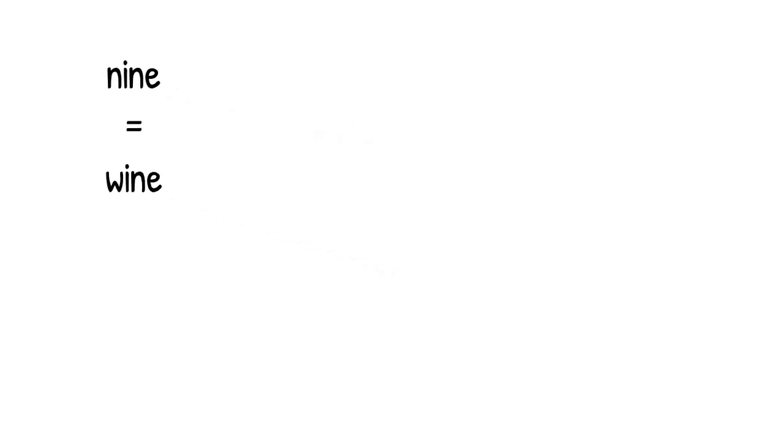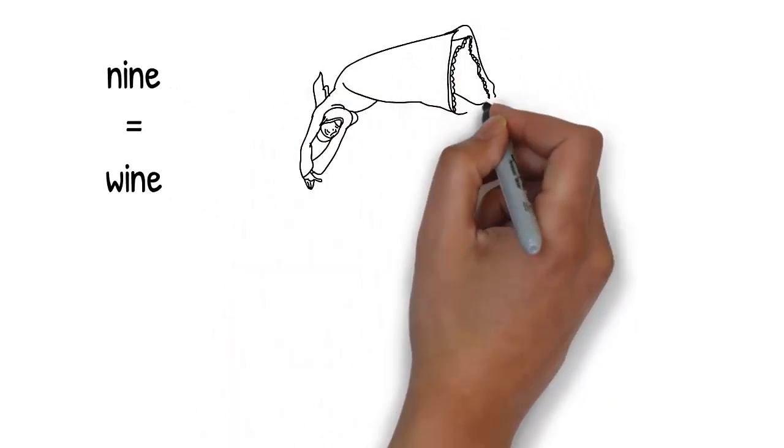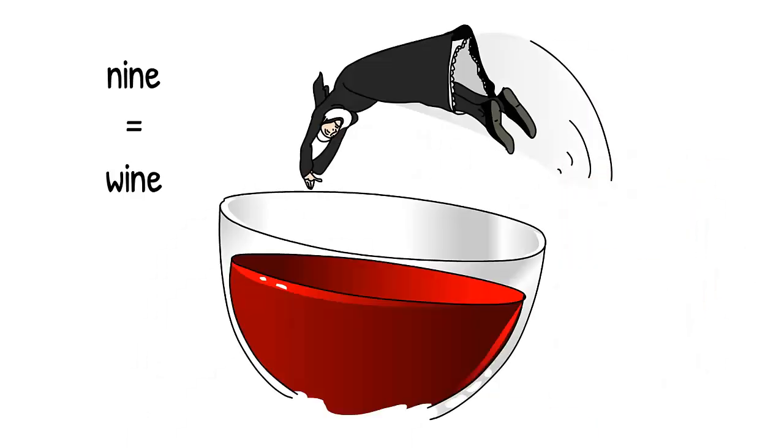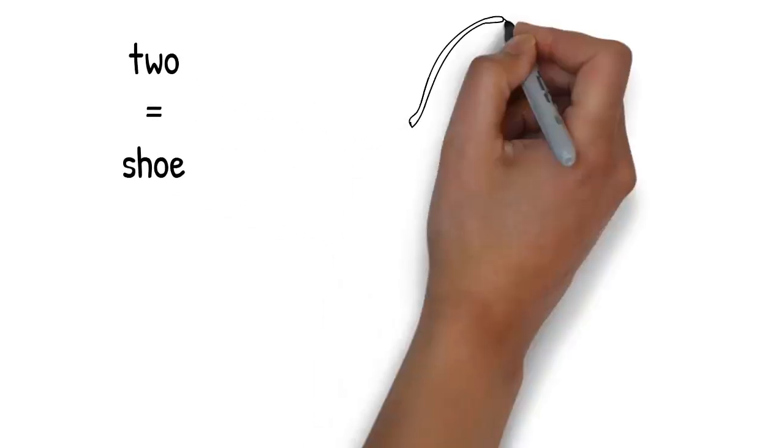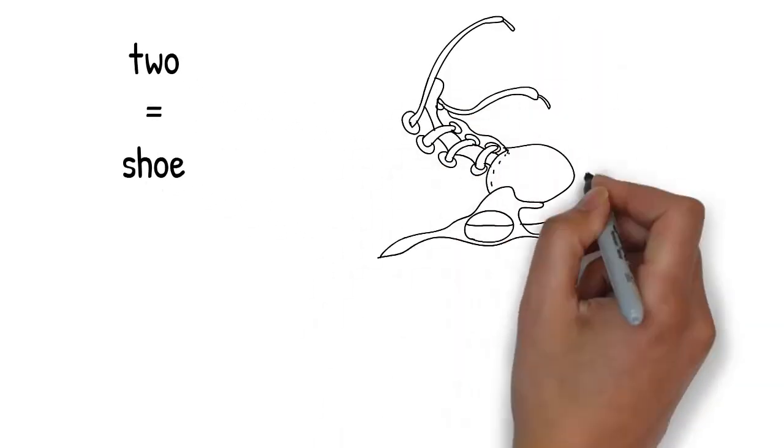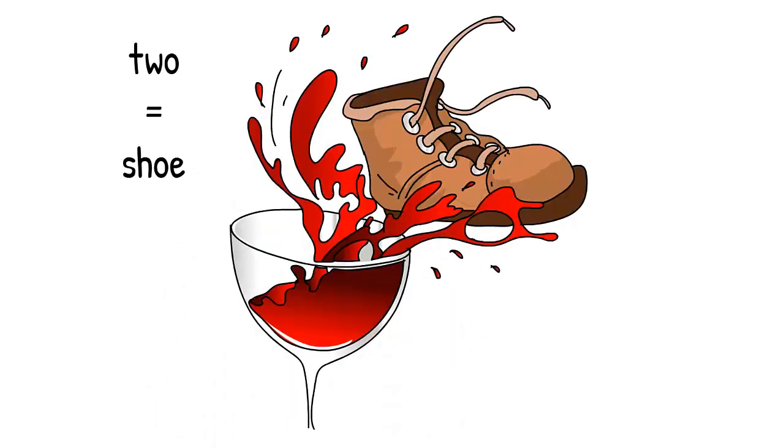Instead of diving into a swimming pool, the nun dives into an enormous glass of red wine. Wine makes you think of nine. The nun disappears beneath the surface of the wine, but the wine suddenly spits out a large shoe. Shoe reminds you of the number two.